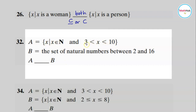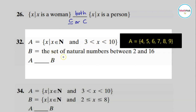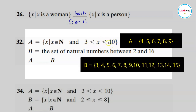For number 32, set A is {x | x is a natural number between 3 and 10} and set B is the set of natural numbers between 2 and 16. All the elements of A are in B, so we can write both subset and proper subset. Proper subset applies because the elements in A are strictly fewer than those in B — B also contains elements that are not in A, so B is bigger than A.